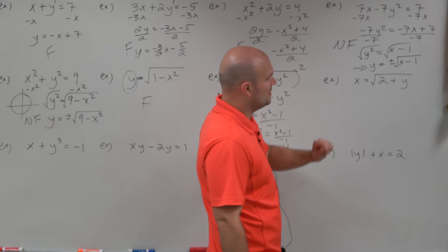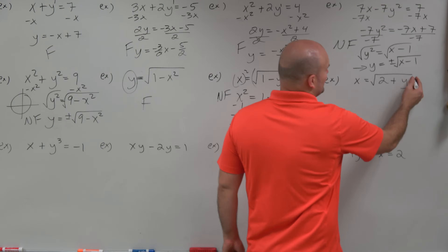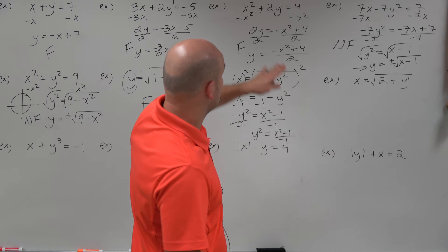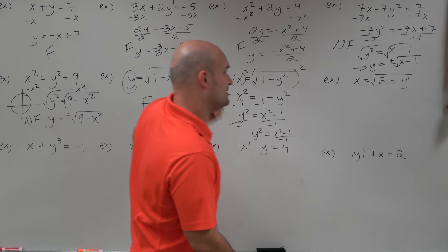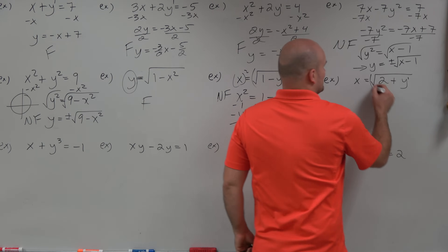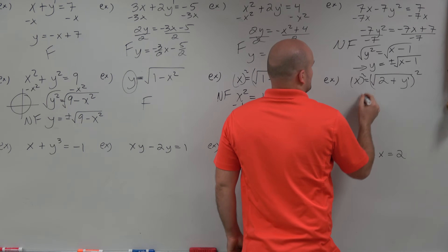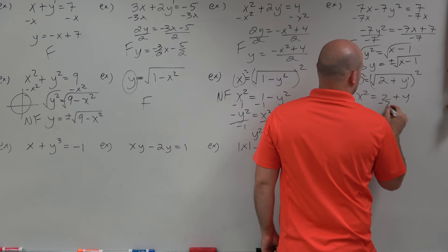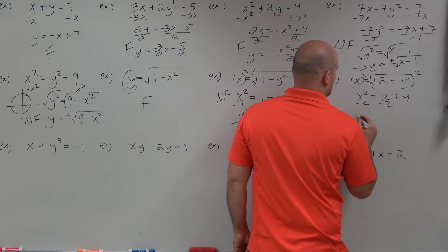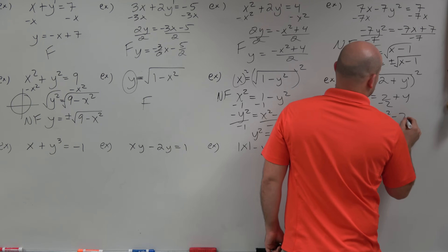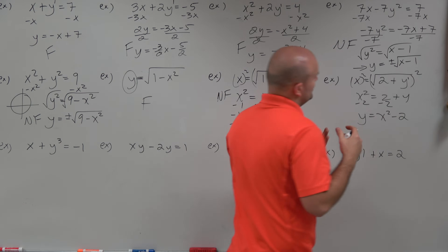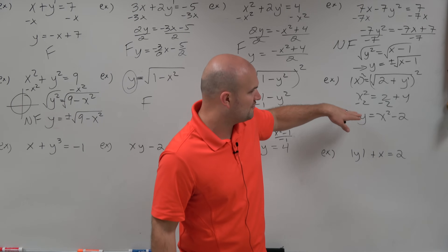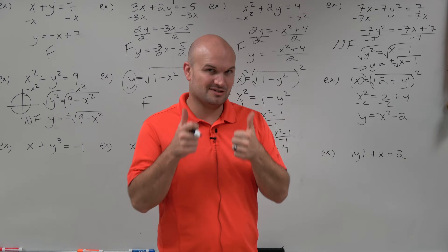For the last one, we can notice that y is to the first power, so it's probably going to be a function. Square both sides: x squared equals 2 plus y, then subtract 2, giving y equals x squared minus 2. So even though it was under a square root, when I solve for y I solve for it uniquely, so it's a function.